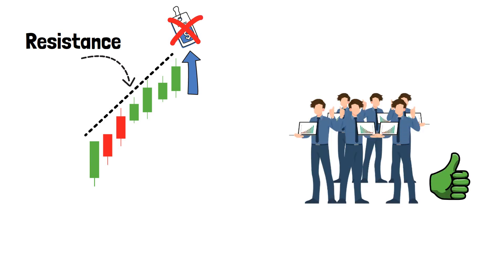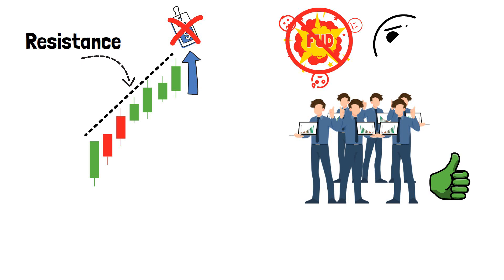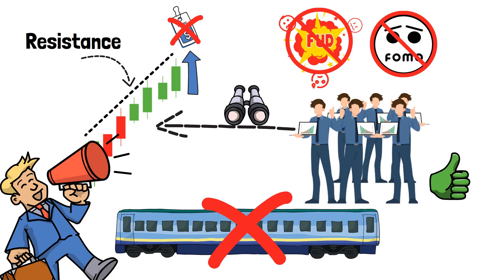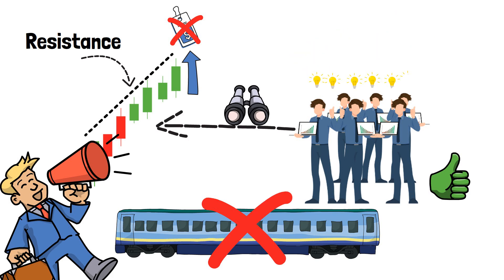Analogically, a trend line connecting highs is referred to as resistance. It marks a level above which the price is not predicted to rise. So, thanks to trend lines, traders are able to avoid such emotions as FUD or FOMO, because if they're aware of the price's resistance level, no rumors are going to convince them to jump on any bandwagon without any critical evaluation of their decision.